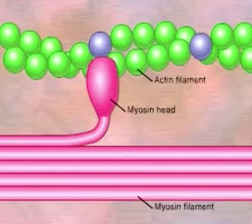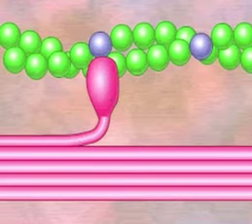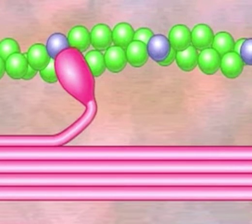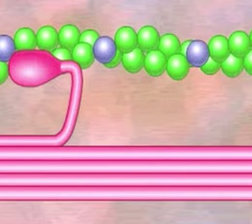Myofilaments can contract or shorten due to interactions between the myosin heads and the actin filaments. Contraction begins with the head of myosin molecules bound to actin on the actin filament.